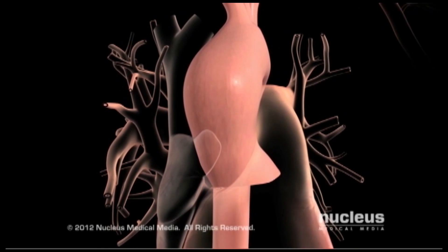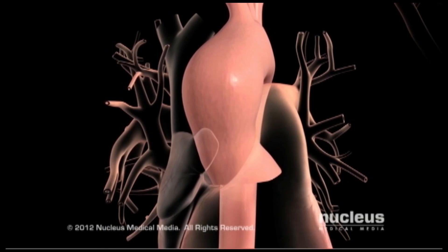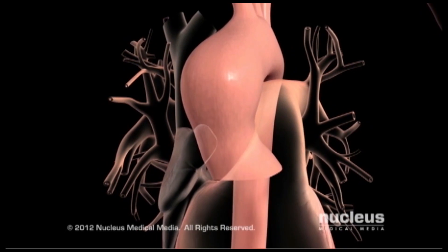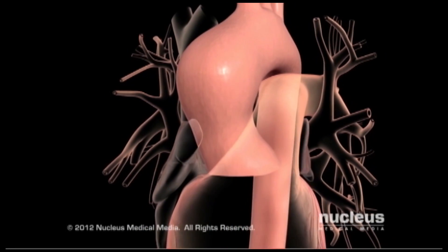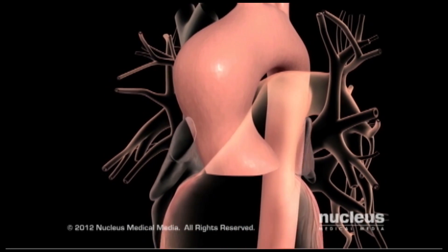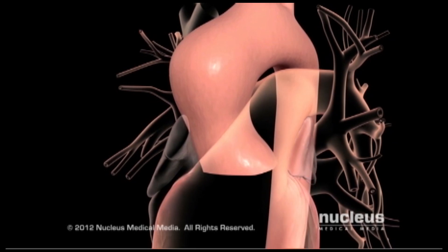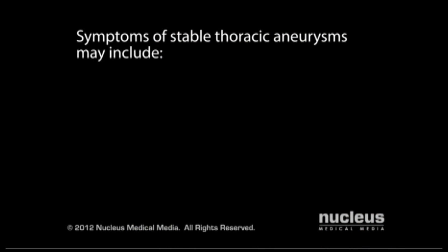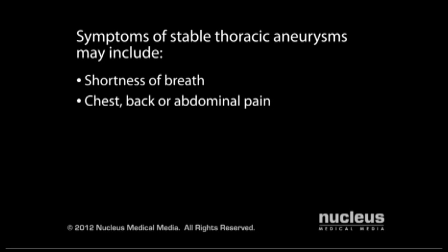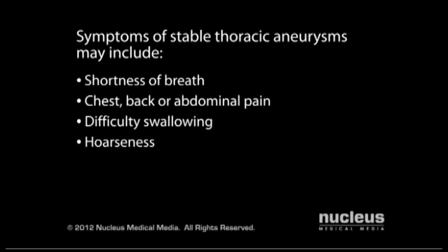Most thoracic aneurysms have no symptoms. However, when they reach larger sizes, various symptoms may appear, depending on the severity and location of the aneurysm. Symptoms of stable thoracic aneurysms may include shortness of breath, chest, back, or abdominal pain, difficulty swallowing, and hoarseness.